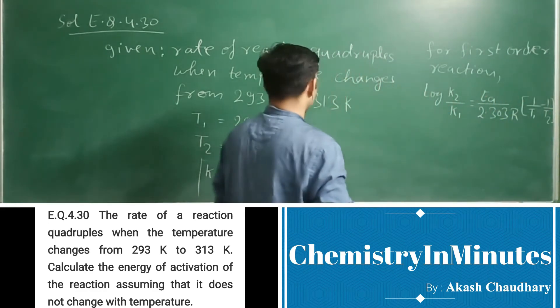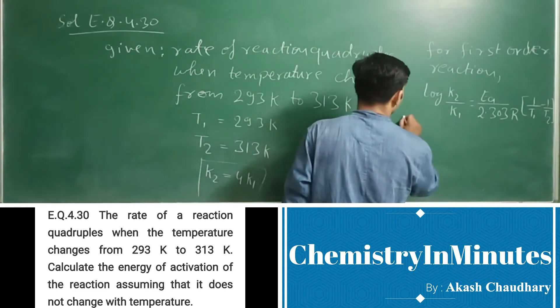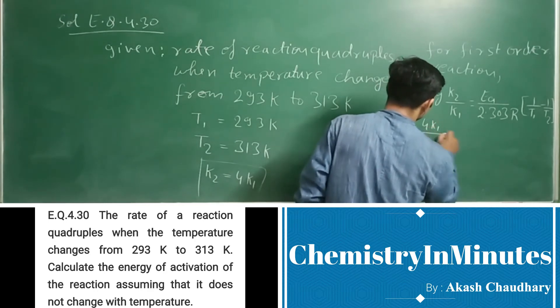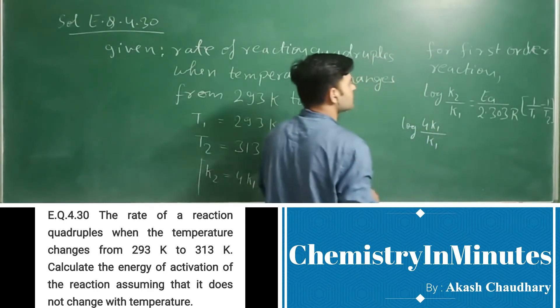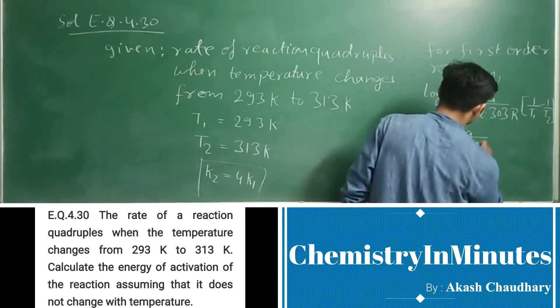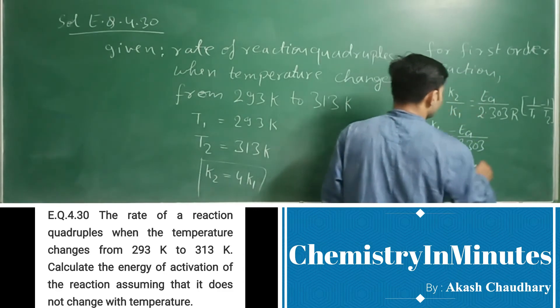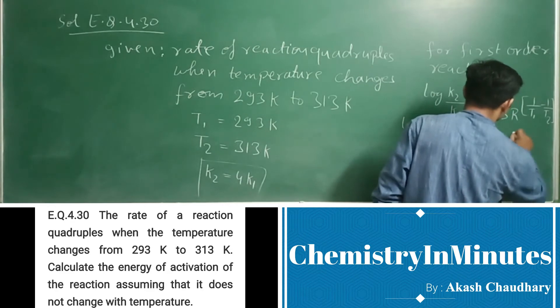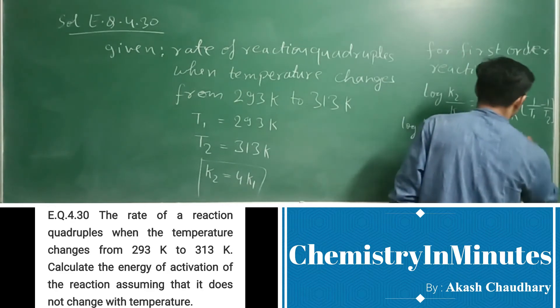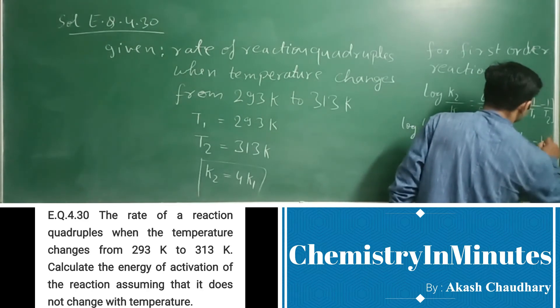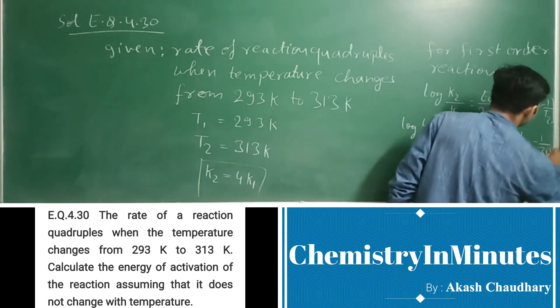Now let's put the values. Log of 4K1 upon K1 equals Ea upon 2.303R. R equals 8.314. 1 upon 293 minus 1 upon 313.